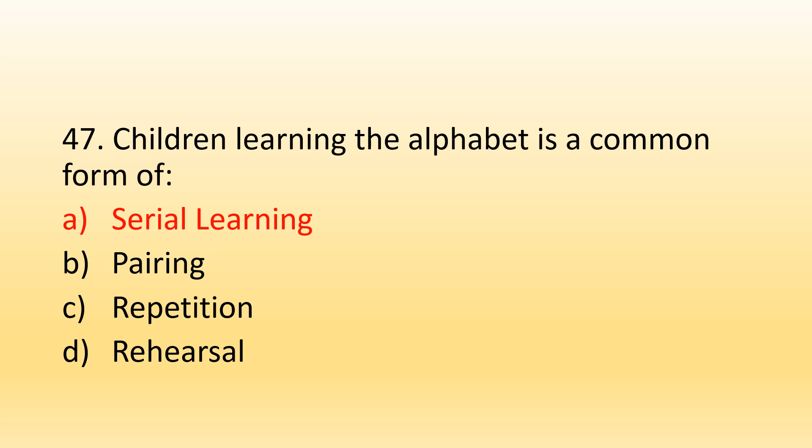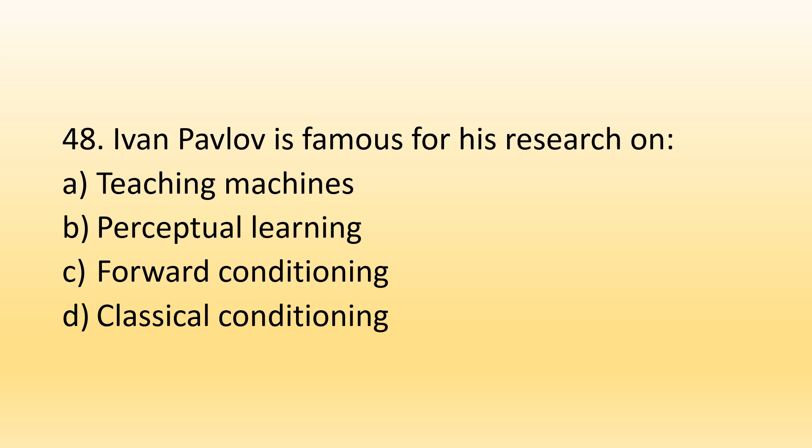Number 48. Ivan Pavlov is famous for his research on: Option A, Teaching machines; Option B, Perceptual learning; Option C, Forward conditioning; Option D, Classical conditioning. The right option is Option D, Classical conditioning. Pavlov is most famous for his dog experiment, in which an unconditioned stimulus is paired with a neutral stimulus. After many repetitions, the conditioned response is acquired, and then the conditioned stimulus alone starts producing the conditioned response.